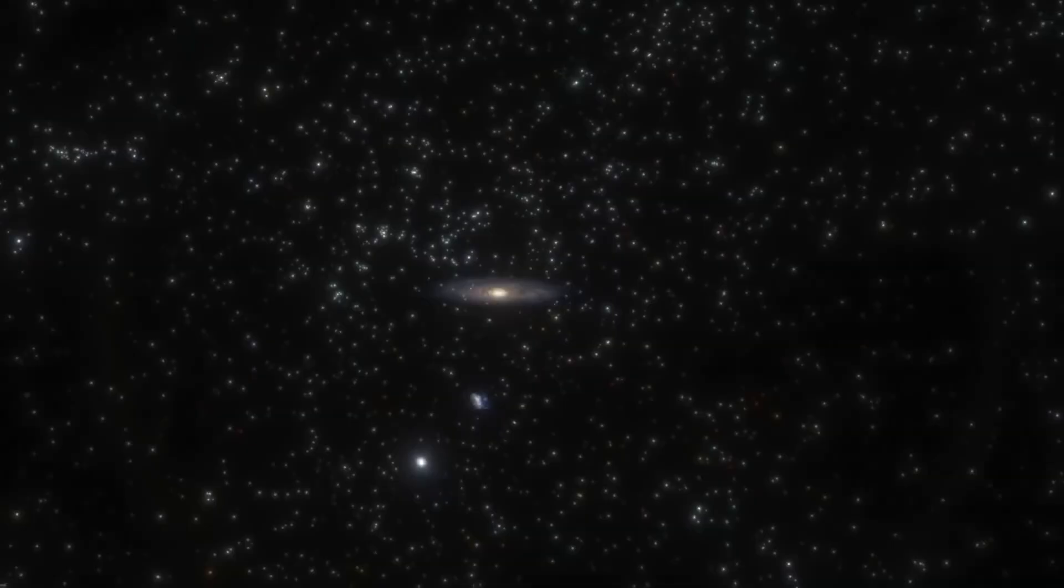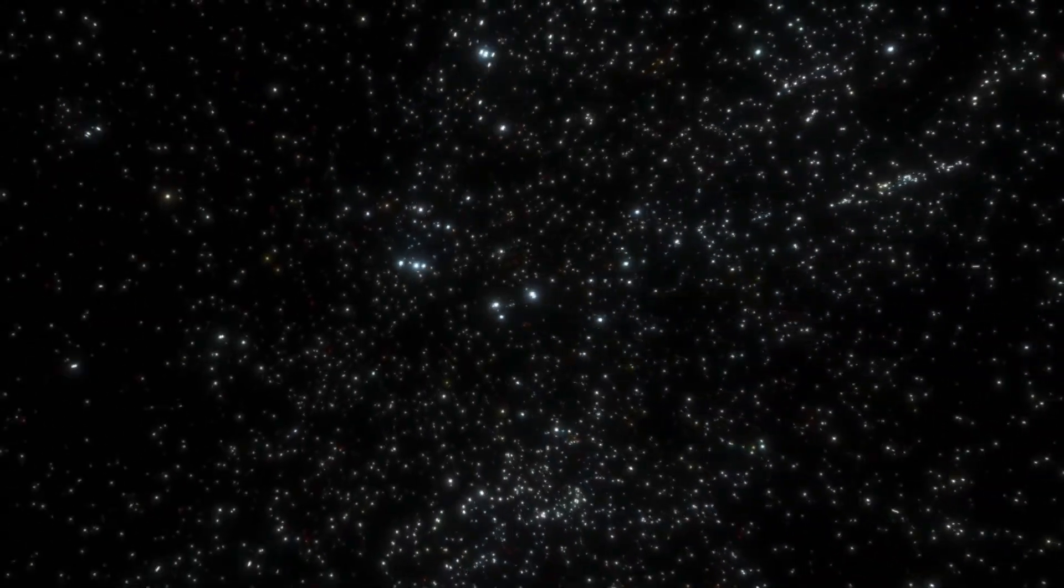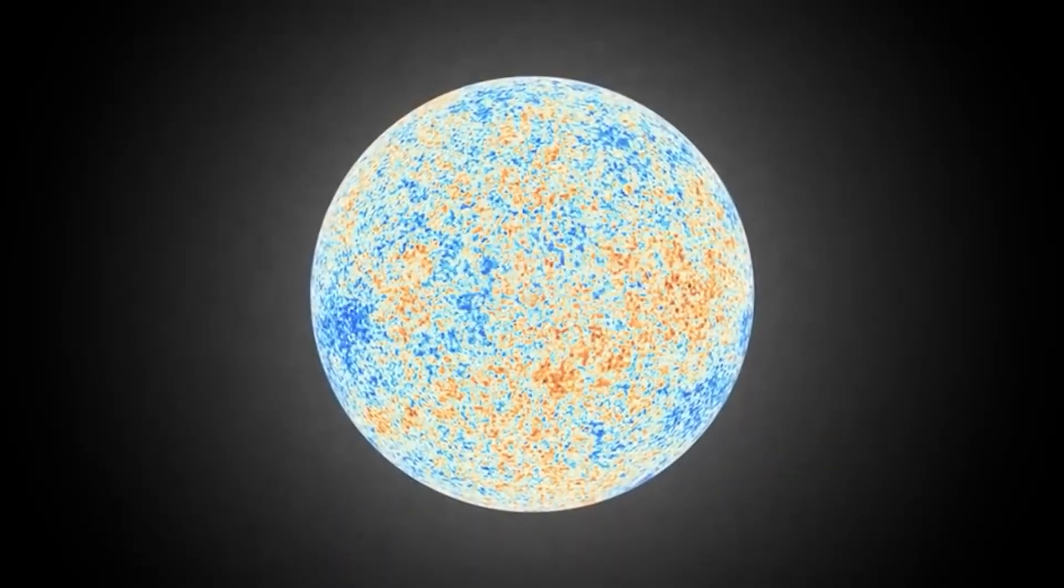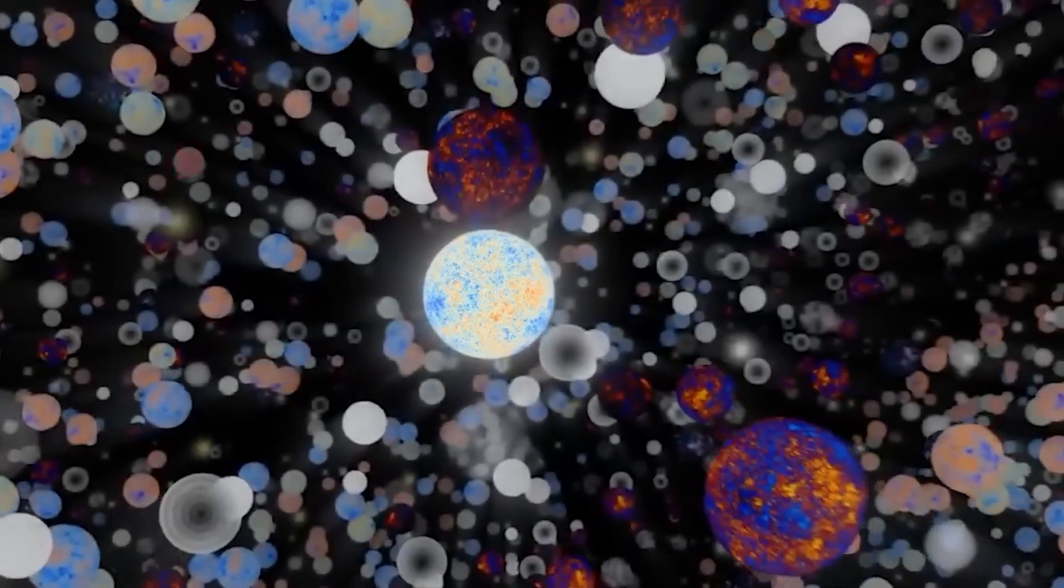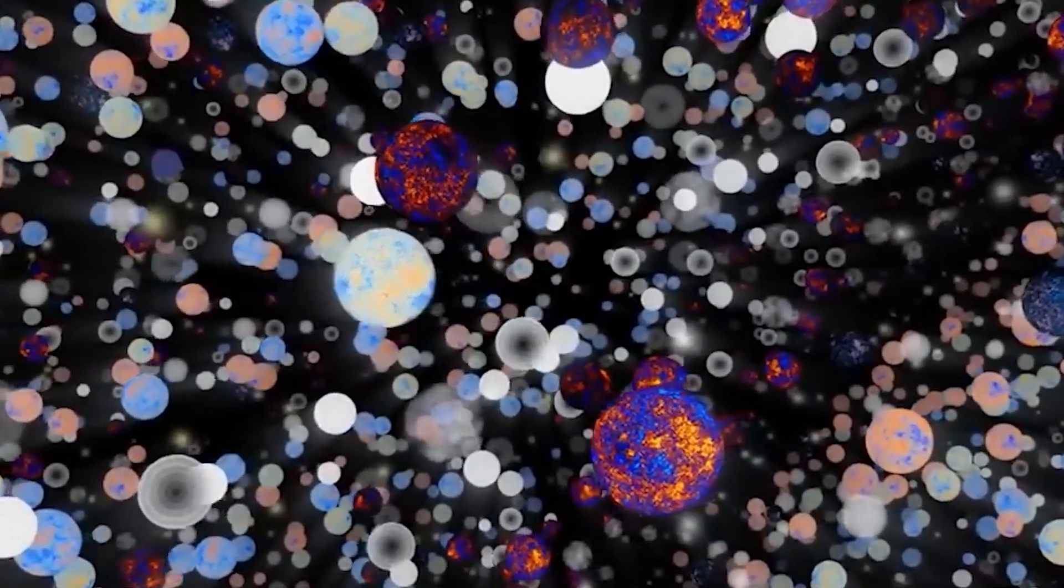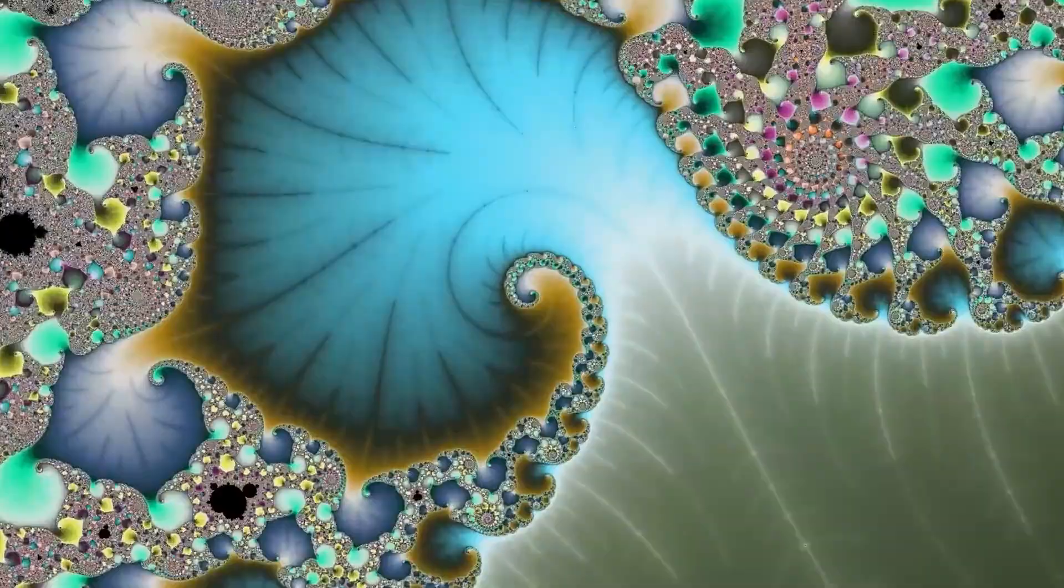But today, we know that the universe doesn't end with our galaxy. There are hundreds of billions of other galaxies scattered across the observable cosmos. According to current estimates, the diameter of the observable universe is around 93 billion light-years. What lies beyond that? We don't know.